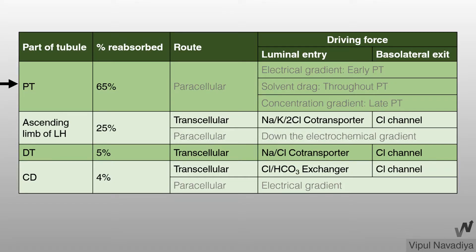To summarize: the proximal tubule reabsorbs 65% of chloride entirely by the paracellular route, driven by electrical gradient in the early proximal tubule, solvent drag throughout, and concentration gradient at the late proximal tubule. The ascending limb reabsorbs 25%, with luminal entry by the sodium-potassium-2-chloride cotransporter and basolateral exit by chloride channels. The distal tubule reabsorbs 5% via the sodium-chloride cotransporter apically and chloride channels basolaterally. At the collecting duct, 4% is reabsorbed: paracellular reabsorption is driven by the lumen-negative transepithelial gradient, while transcellular reabsorption by beta intercalated cells involves chloride-bicarbonate exchangers at the luminal membrane and chloride channels at the basolateral membrane. About 1% of chloride is excreted in urine.